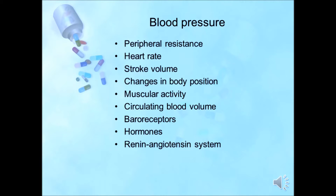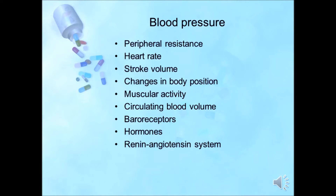The renin-angiotensin system is also an important regulatory feedback loop. A drop in blood pressure to the renal arteries stimulates the secretion of renin. Renin activates the renin-angiotensin system by cleaving angiotensinogen produced in the liver to yield angiotensin 1, which is further converted into angiotensin 2 by ACE, the angiotensin-converting enzyme. Angiotensin 2 then constricts blood vessels, increases the secretion of antidiuretic hormone (ADH) and aldosterone, and causes reabsorption of sodium in the kidneys, thus leading to water retention, increased blood volume, and increased blood pressure.